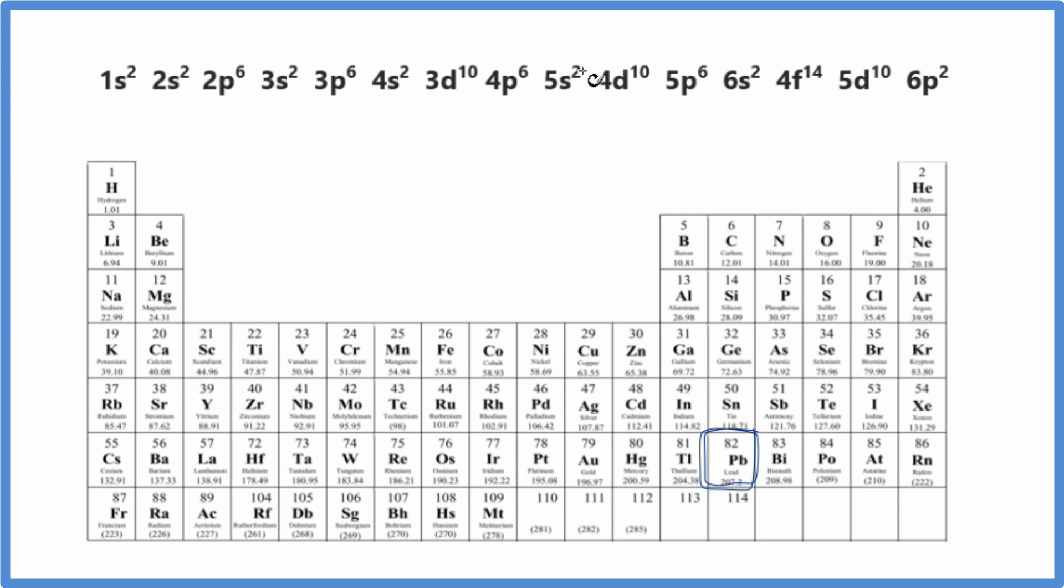If you add all these superscripts up, that would give you 82, 82 electrons here in the configuration for lead.